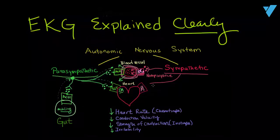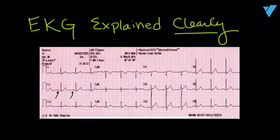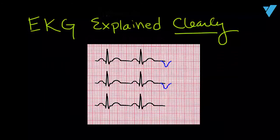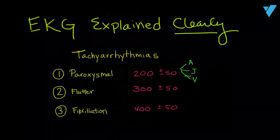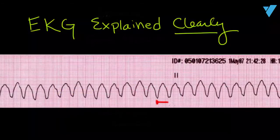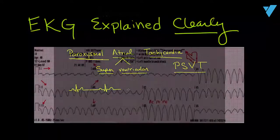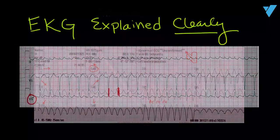We'll cover the impact of our nervous system and neurotransmitters on the heart, then on to rate, rhythm, axis, escape rhythms, PVCs, bigeminy, tachyarrhythmias, ventricular tachycardia, and the key differences between ventricular tachycardia and paroxysmal supraventricular tachycardia with aberrancy.